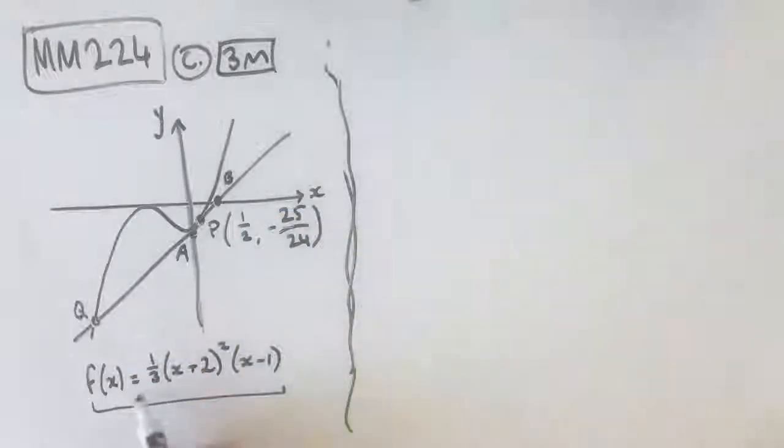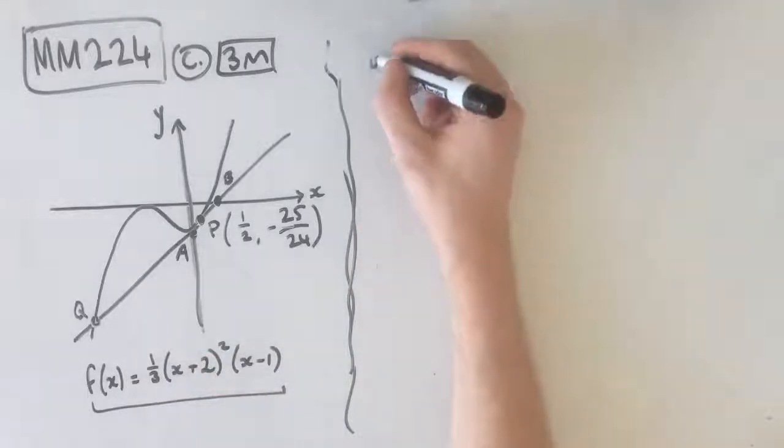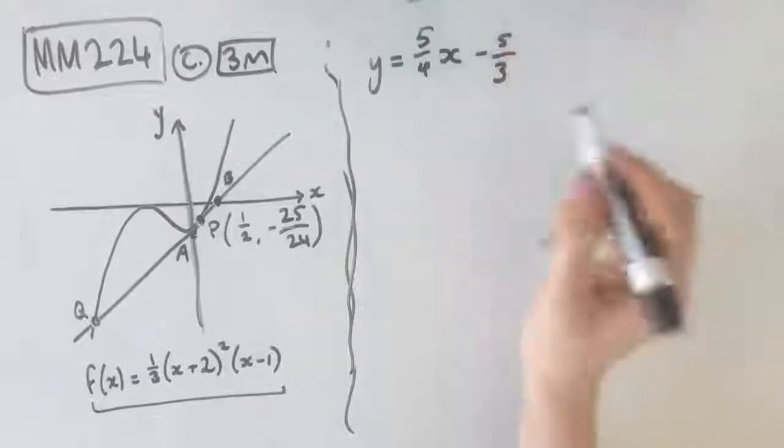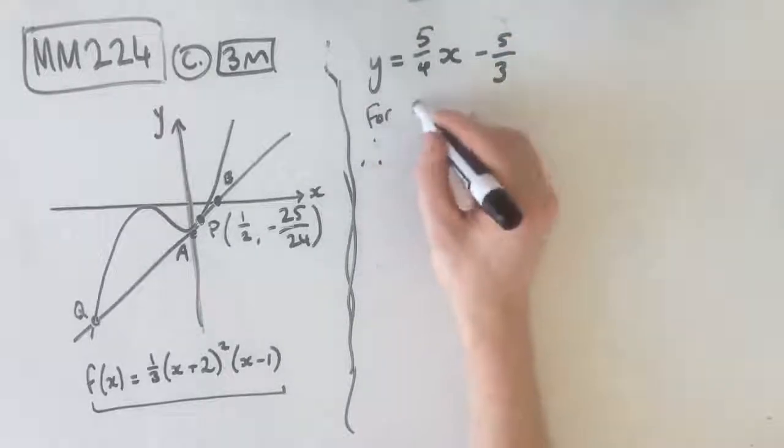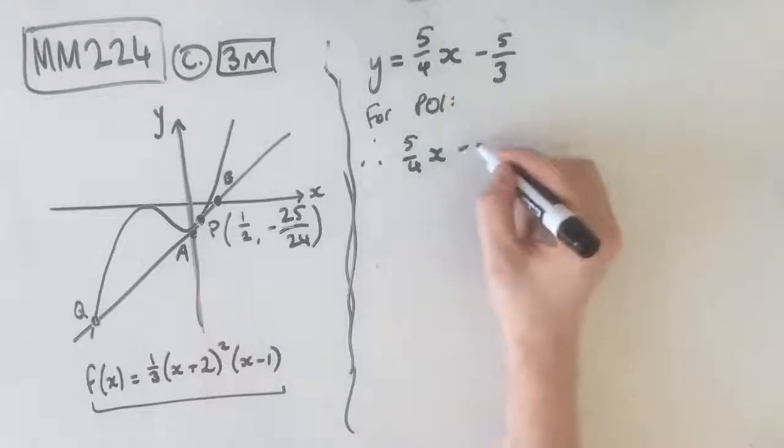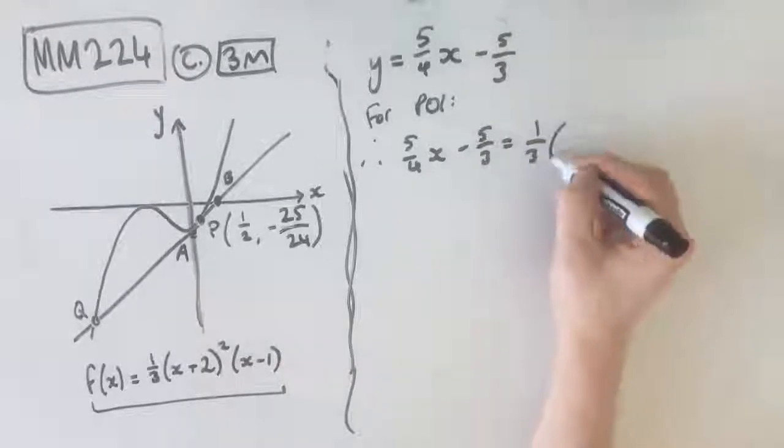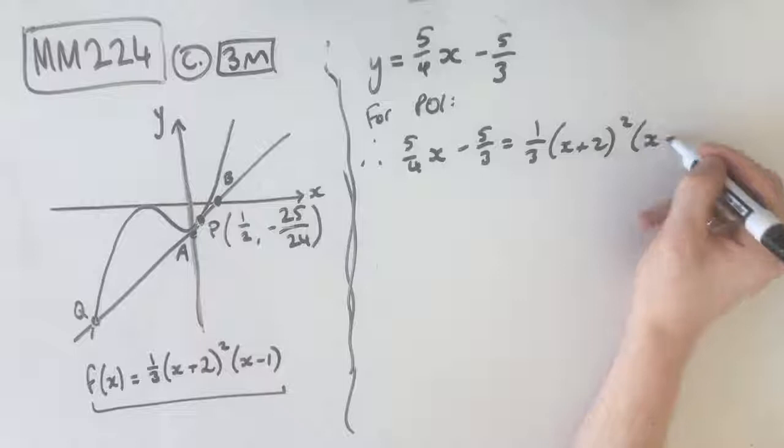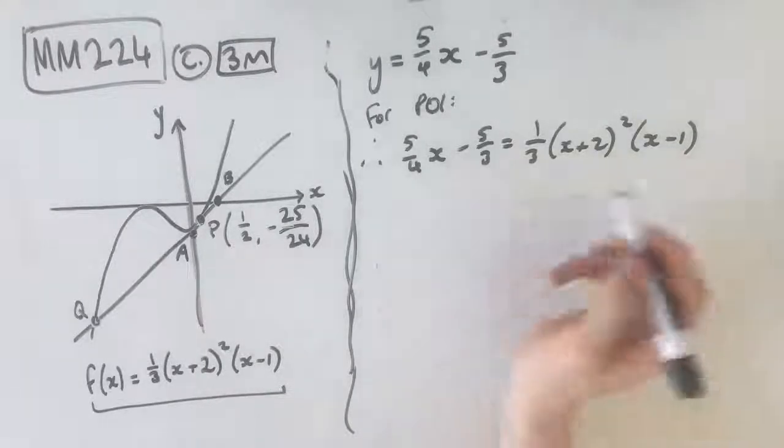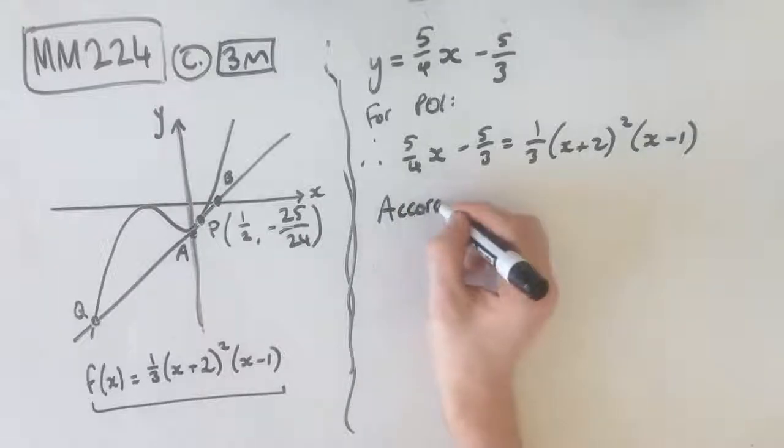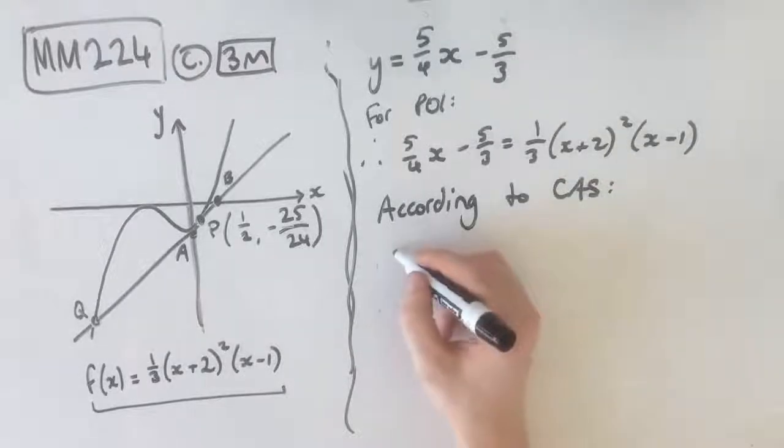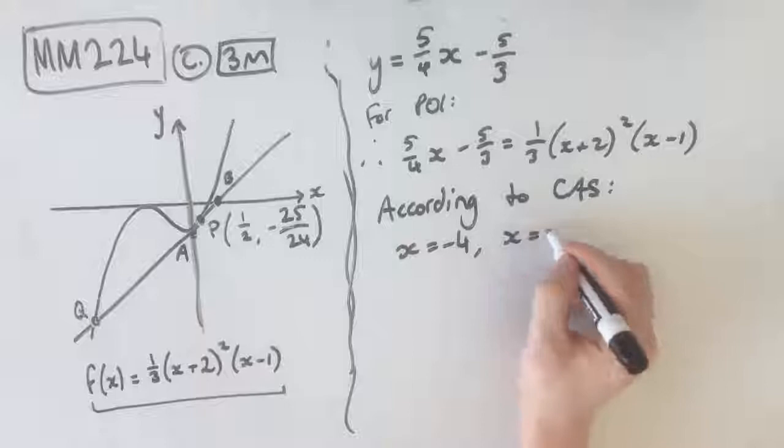How do we find the point of intersection between two graphs? We let them equal each other. We know that f(x) equals this, and our tangent was equal to 5/4x - 5/3. Which means, for point of intersection, 5/4x - 5/3 equals 1/3(x+2)²(x-1). Now, because we have our calculator enabled for this question, do not try and do this by hand. Just say, according to CAS, and then solve this in your calculator. So x equals -4, and x equals 1/2.